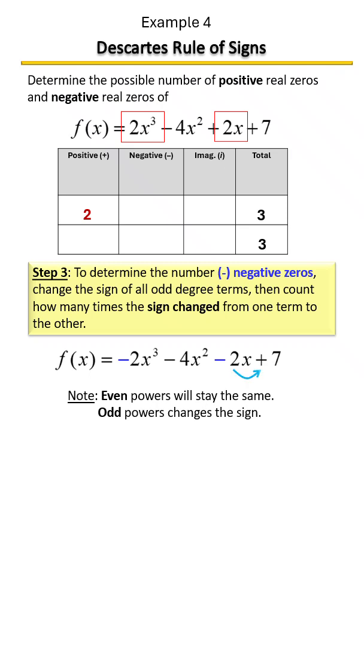As you can see, there was only one sign change at the very end. So we're going to have a one there for our negative zeros.